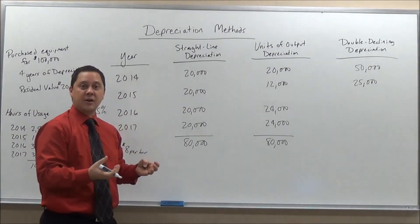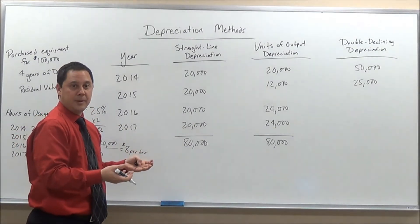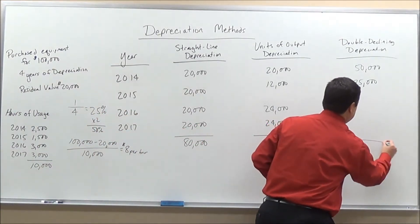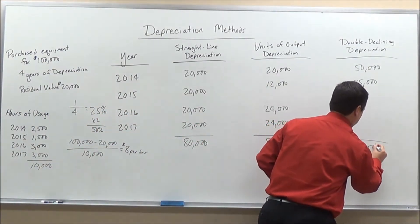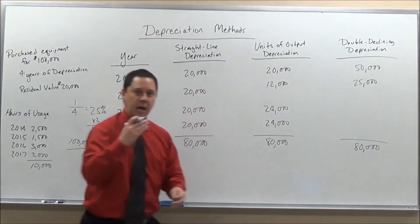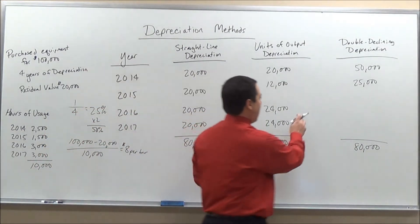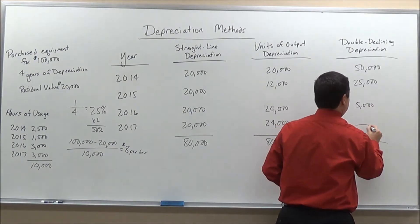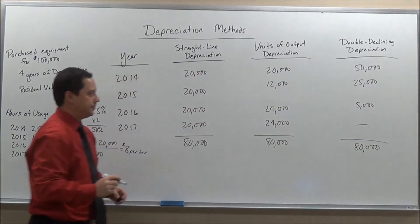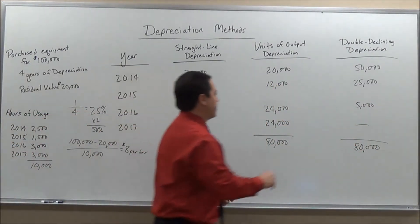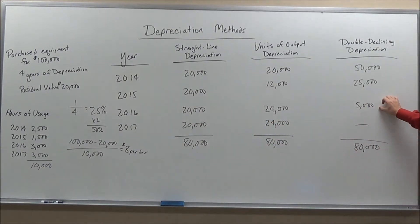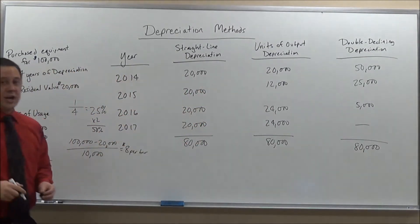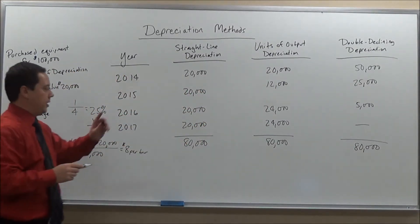That leaves $25,000 left. However, we stop at the $80,000 cap — the maximum depreciable amount. So my last year will only be the remaining $5,000 to reach that cap, and we won't have any depreciation in the final year. So $50,000 plus $25,000 plus $5,000 gives us $80,000 total, which is how we arrive at our depreciation using the double declining balance method.